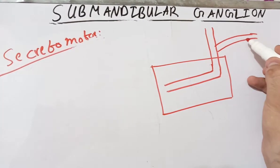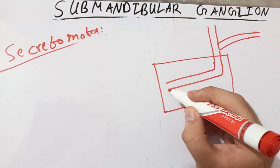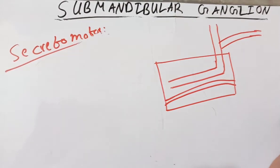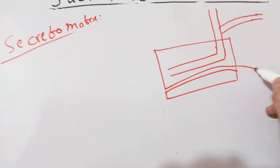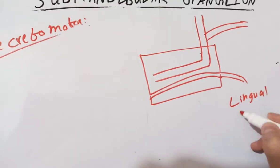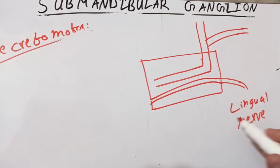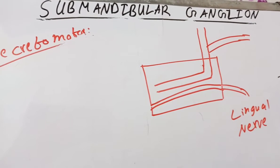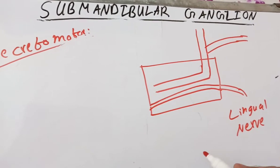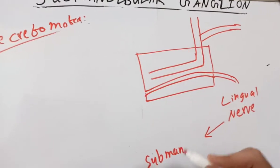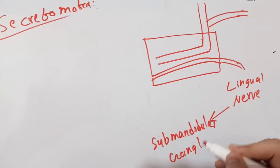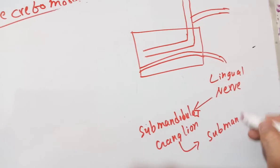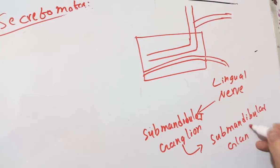You must differentiate between the greater petrosal nerve and the chorda tympani nerve. The chorda tympani nerve is given off in the lateral wall of the tympanic cavity. This chorda tympani nerve will then join the lingual nerve, which is a branch of the mandibular nerve, in the infratemporal fossa just before entering the tongue. The lingual nerve supplies sensory innervation to the tongue. From the lingual nerve, the fibers relay to the submandibular ganglion, and from there post-ganglionic fibers supply the submandibular and sublingual salivary glands. This is the secretomotor supply.